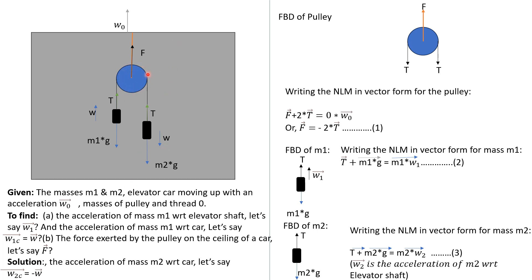This is the pulley — the blue color is the pulley. The red color is the thread by which it is attached to the ceiling of the car. F is the tension force in this thread. This black color thread is passing across the pulley. On one side mass M1 is hanging, and on the other side M2 is hanging.